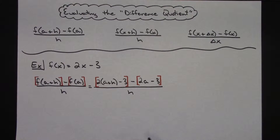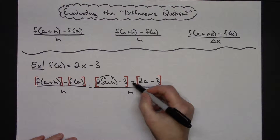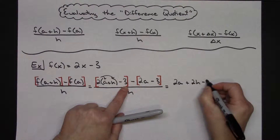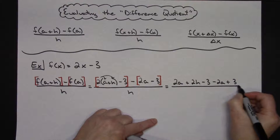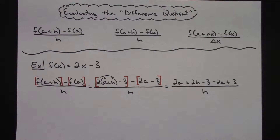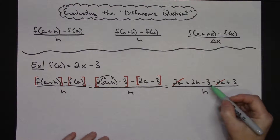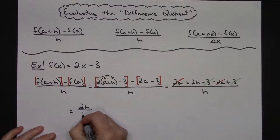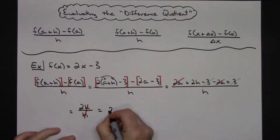Now simplifying: I distribute the 2 to get 2a + 2h − 3, then subtract the bracketed quantity, changing all signs to get minus 2a plus 3, all over h. A positive 2a and a negative 2a cross out. A negative 3 and a positive 3 cross out. That leaves 2h over h, and those h's cancel too. So this straightforward example reduces to the simple numerical answer of 2.